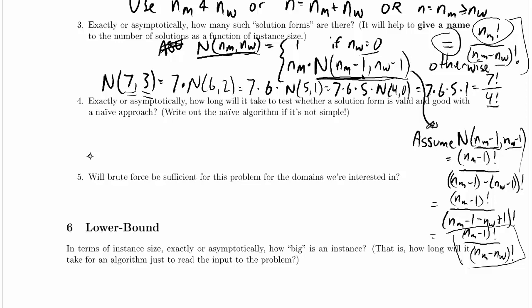So we're given all these solutions. We're given NM factorial divided by NM minus NW factorial of them. Each of them is valid. In this particular problem, the way we define valid, all of the solutions we're producing are valid, but we don't know that they're good.